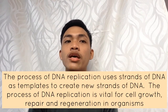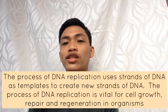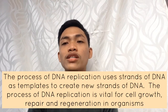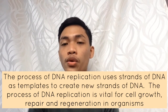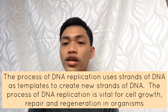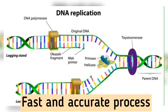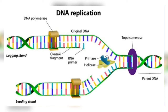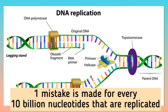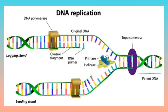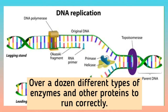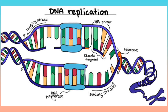The process of cell division uses strands of DNA as templates to create new strands of DNA. The process of DNA replication is vital for cell growth, repair, and reproduction of organisms. The replication of DNA is an incredibly fast and accurate process. On average, around one mistake is made for every 10 billion nucleotides that are replicated. The process includes over a dozen different types of enzymes and other proteins to run correctly. DNA replication is probably one of the most amazing tricks that DNA does.